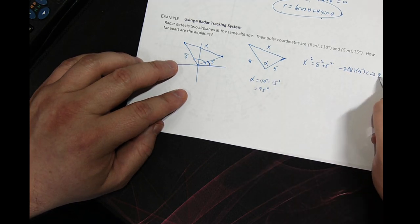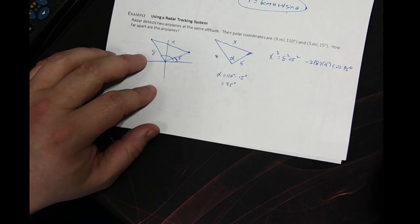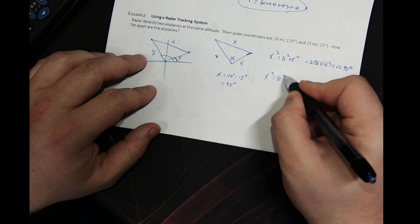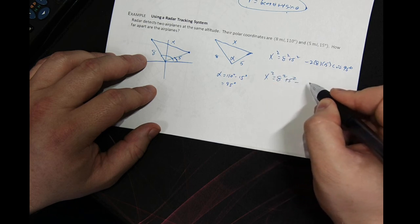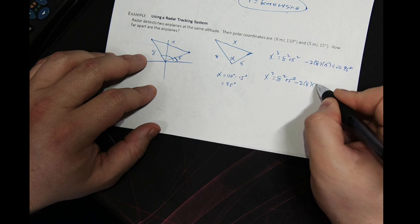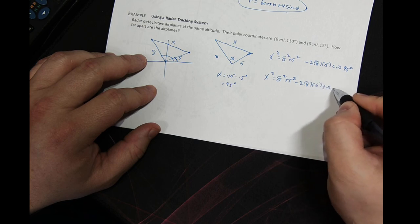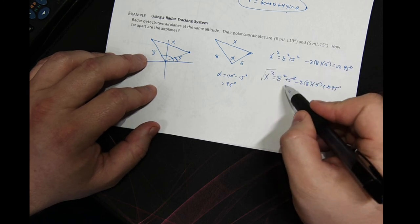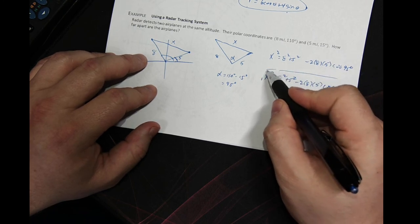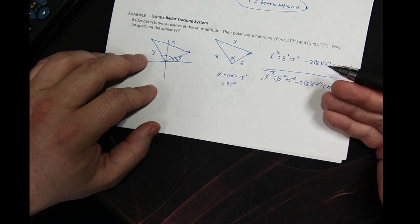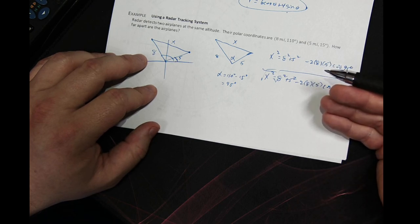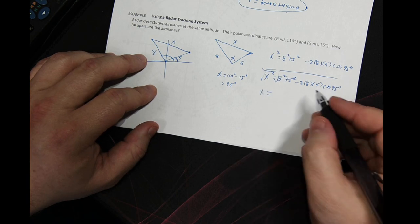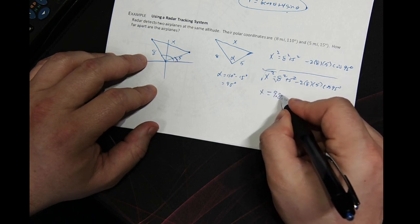So using the law of cosines: x² = 8² + 5² − 2(8)(5)cos(95°). This is nothing but calculator work — throw that in and square root it, taking only the positive value. If you do that, you'll find the distance between the two airplanes is approximately 9.8 miles.